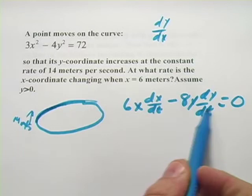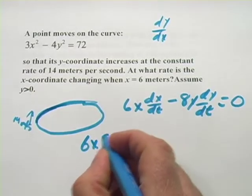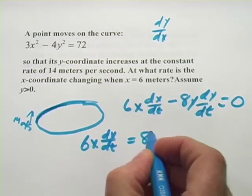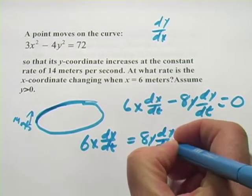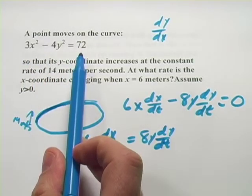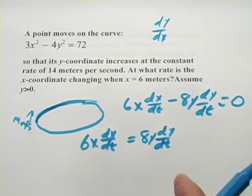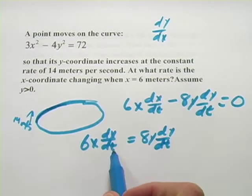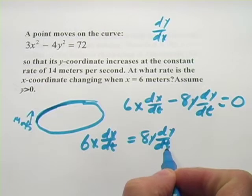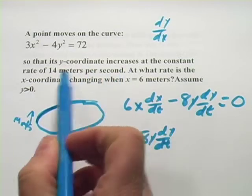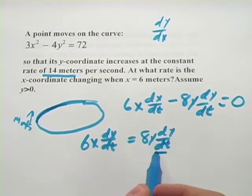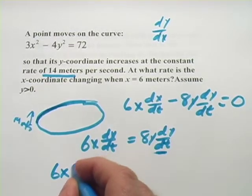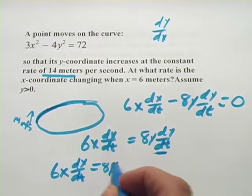I'm going to rewrite this equation by adding 8y dy dt to both sides. So I've got 6x dx dt equals 8y dy dt. So all I've done so far is taken the derivative of this equation with respect to time and rearrange the terms. Now we've got an x term multiplied by dx dt. And dx dt is the rate of change of x with respect to t. And we've got 8y times dy dt. And dy dt is the rate of change of y with respect to t. Now they're telling us that the y coordinate increases at the constant rate of 14 meters per second. So I can replace this part with 14. So let's go ahead and do that. 6x dx dt equals 8y times 14.